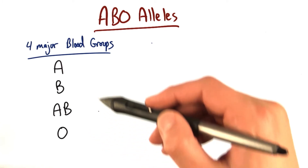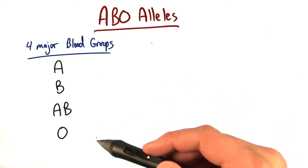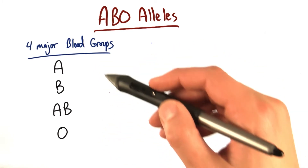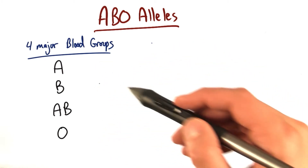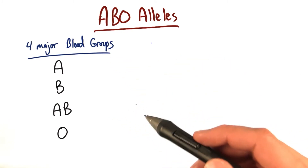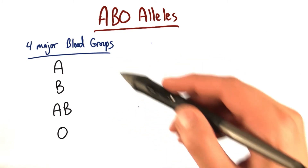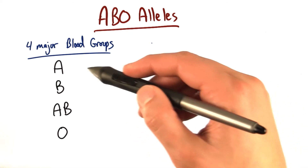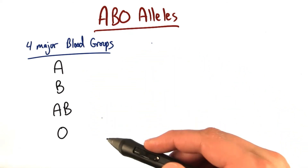But you have two alleles for the ABO gene — two possibilities. You could be two A's, or two B's, or an A and a B, or maybe you're an A and an O. Depending on those combinations, together that will result in which blood type you are.